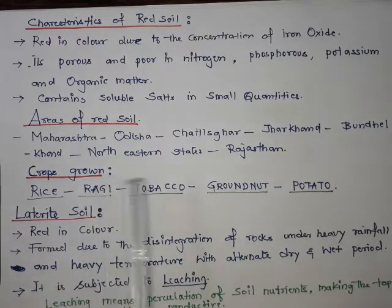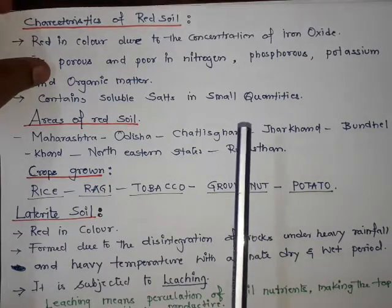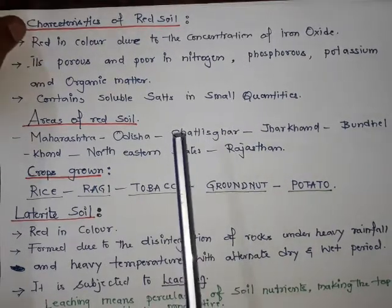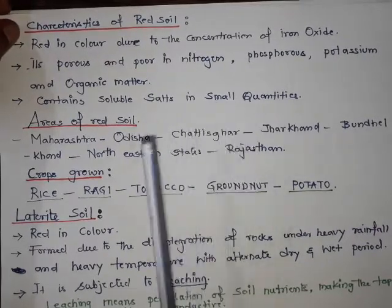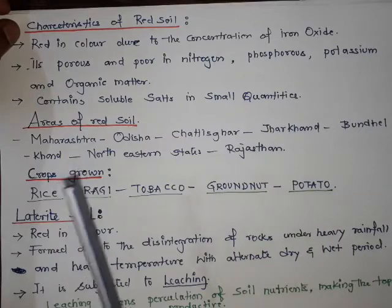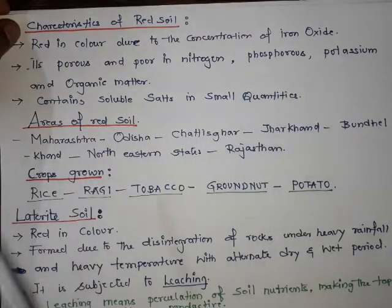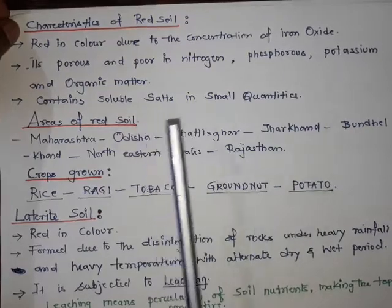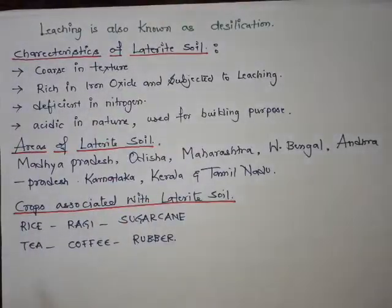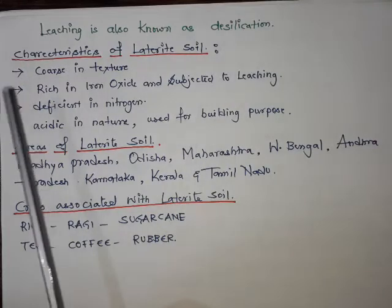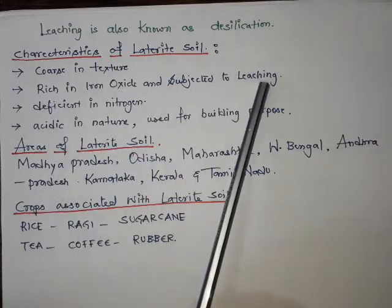For board exams, the similarities between red soil and laterite soil are: both are red in color, both are rich in iron oxide, and both soils are subjected to leaching. Characteristics of laterite soil include being coarse in texture, rich in iron oxide, subjected to leaching, and deficient in nitrogen.